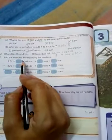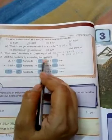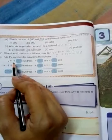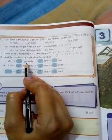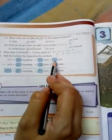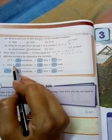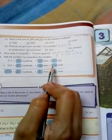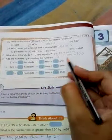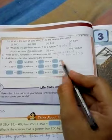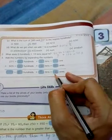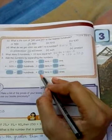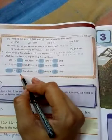Third question: Add the numbers by expanding the number. What is 271 expansion? 200, 7 tens, 1 one. 325 expansion? 3 hundreds, 2 tens, 5 ones. Now, from where do we start? Ones place. 1 plus 5 is 6, 7 plus 2 is 9, 2 plus 3 is 5.